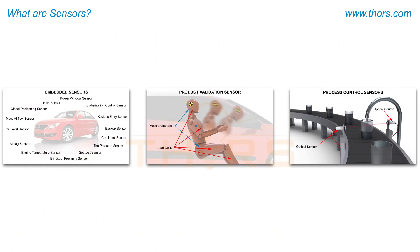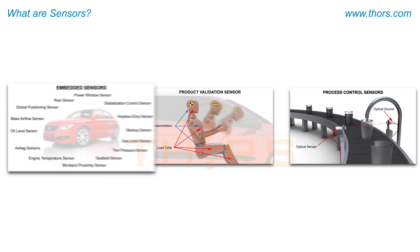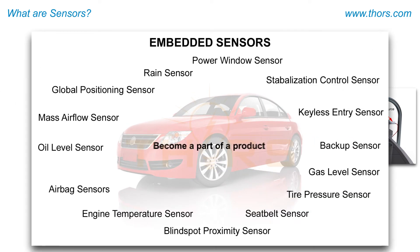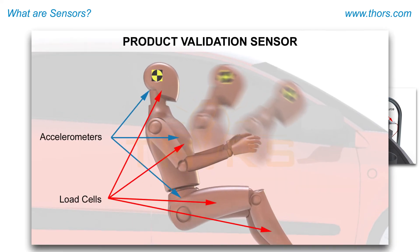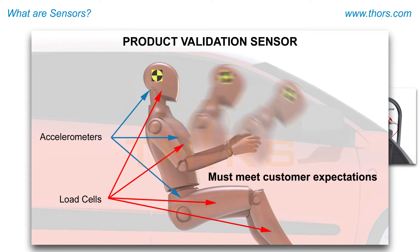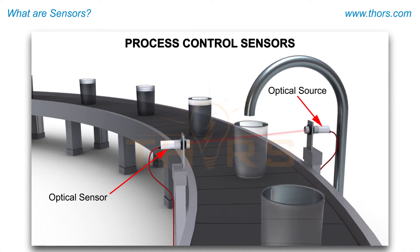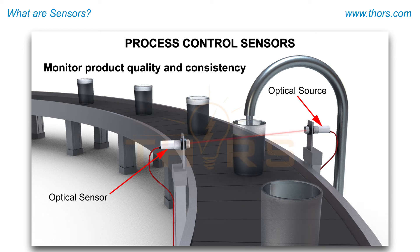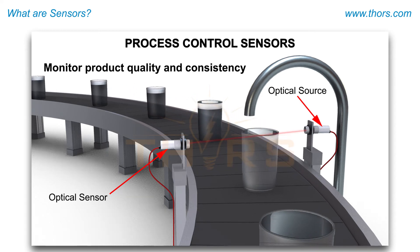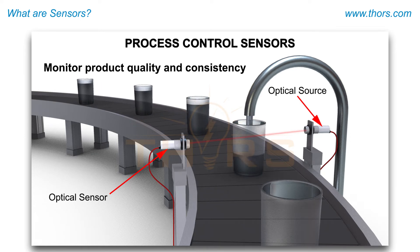Furthermore, sensors can be split up into three categories. These sensor categories include embedded sensors, which are sensors incorporated into products to provide functionality, such as smart products that are used to sense physical parameters. Product validation sensors, which are used to validate products that are intended for public or commercial distribution, must meet or exceed the needs of the intended market. Process control sensors, which are highly stable sensors that are used to monitor and control processes, such as processes that manufacture processed foods, pharmaceuticals, fuels, oils, and industrial chemicals.